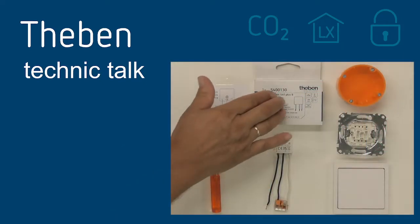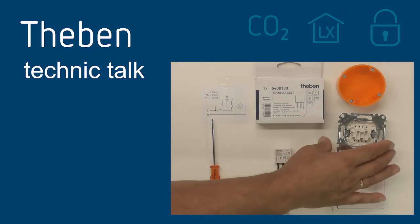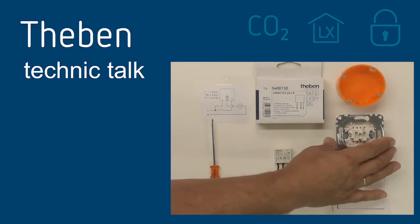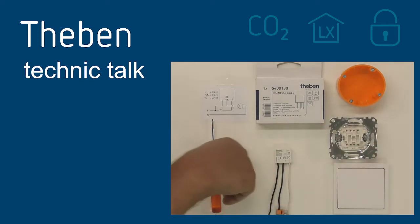What we need is the following: the DEMAX dimmer, which is original dimension, and we have to exchange the existing switching button to a push button. That's it.